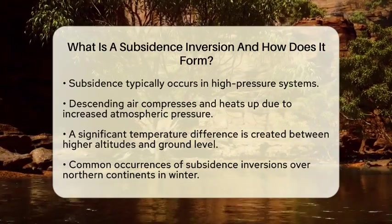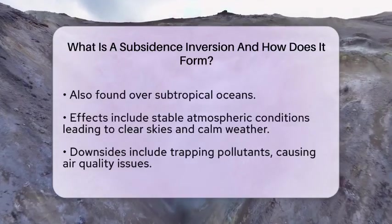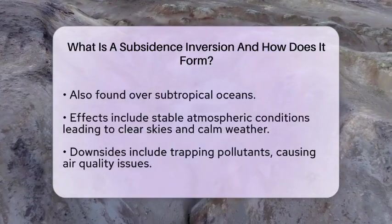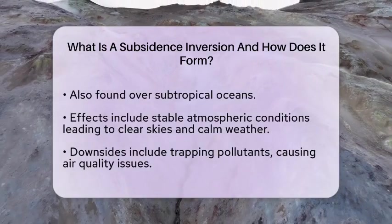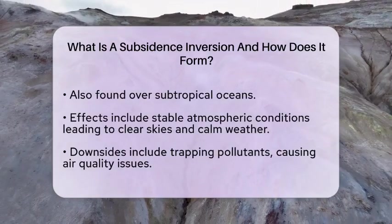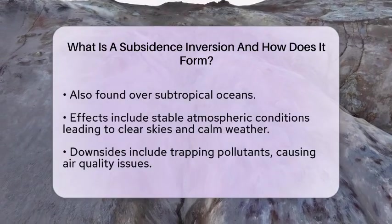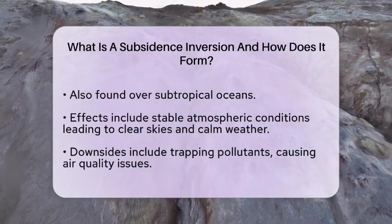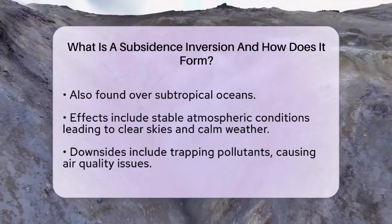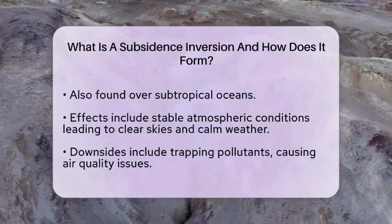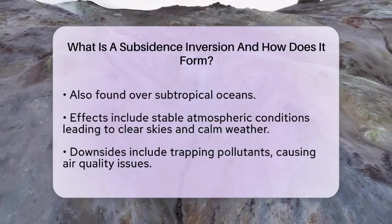You can often find these conditions over northern continents during winter or over subtropical oceans. The effects of subsidence inversions are quite interesting. They lead to stable atmospheric conditions, which often result in clear skies and calm weather. However, there is a downside: these inversions can trap pollutants close to the surface, leading to air quality issues.